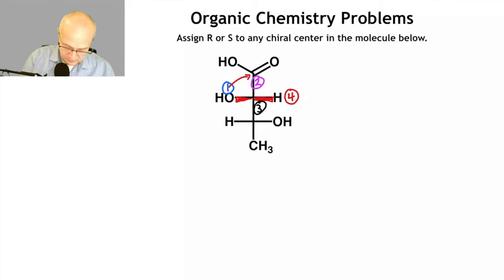So one to two, two to three, and then back to one. So it appears to be R. However, remember, to assign R S, you have to have the low priority group facing away from you. That's the rule.